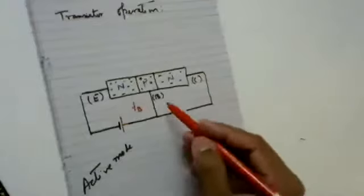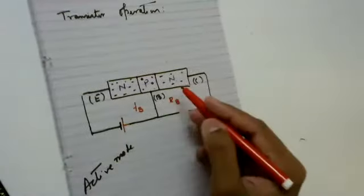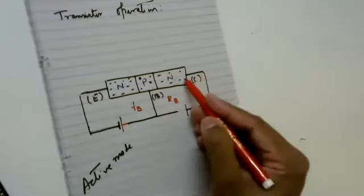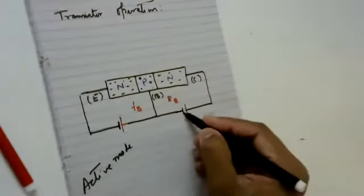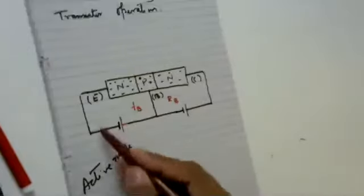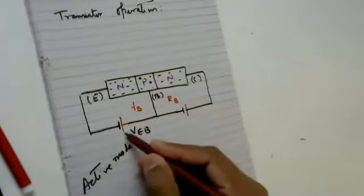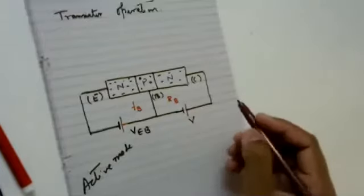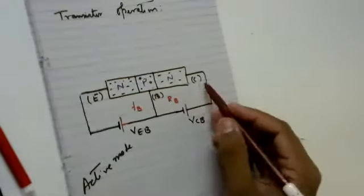Now we'll see how we are going to bias the base-collector junction. To reverse bias this junction, I connect the positive terminal of the battery to the N side, and the negative terminal to the P side. This potential I call VEB — the emitter-to-base voltage — and the other terminal I call VCB, that is the collector-to-base voltage.